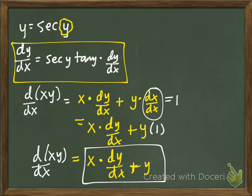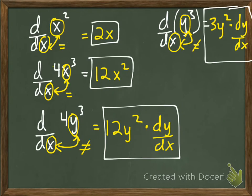The next video will explain the implicit differentiation process, but hopefully you're getting a better idea of how to find the derivative of y versus the derivative of x. Just remember: when the two letters are the same, there's no need for the chain rule. When the two letters are different, you have to use the chain rule.